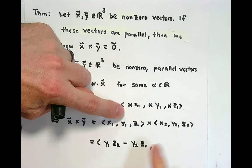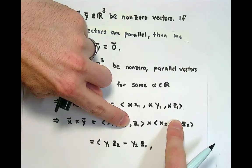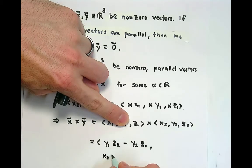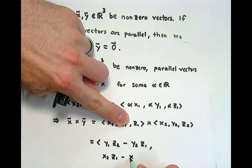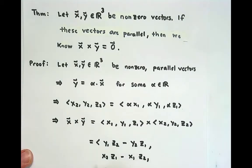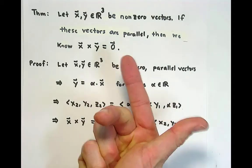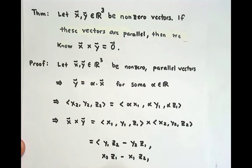Then we go down to the second component. We cancel this out, but we do it in reverse order. So this becomes x₂z₁ minus x₁z₂. And the reverse order came from i cross k is negative j. And then we have the final part, which would be x₁y₂ minus x₂y₁.